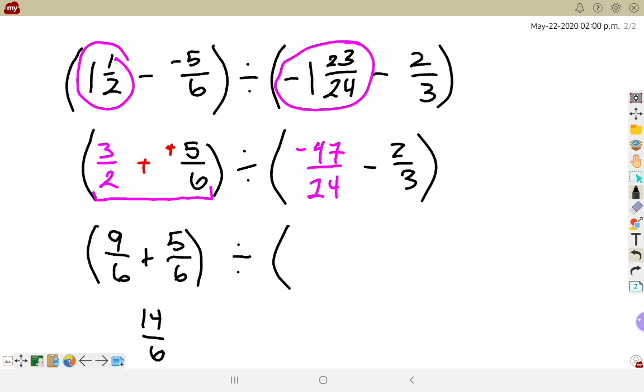On the right-hand side of that division sign, I still have the negative 47 over 24, that was fine. But I have to change my 2 thirds. It needs to be multiplied top and bottom by 8 to give me 16 over 24. And now I have negative 47 over 24 minus 16 over 24, and negative 47, take away 16 more, gives me negative 63 over 24.